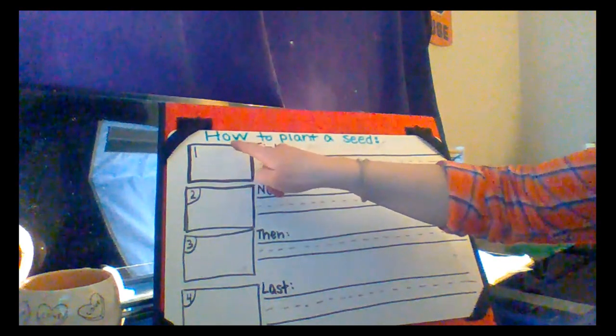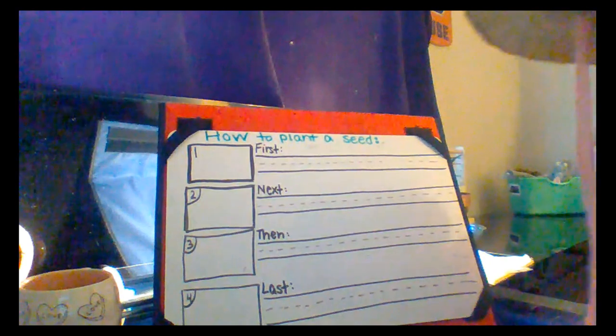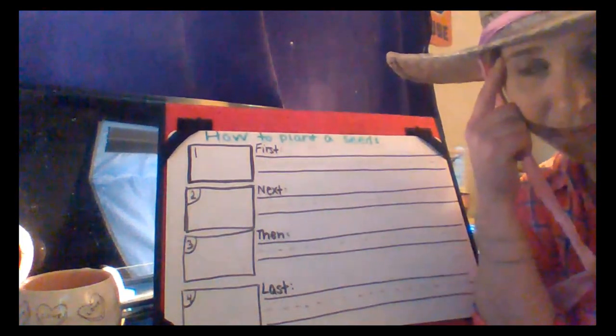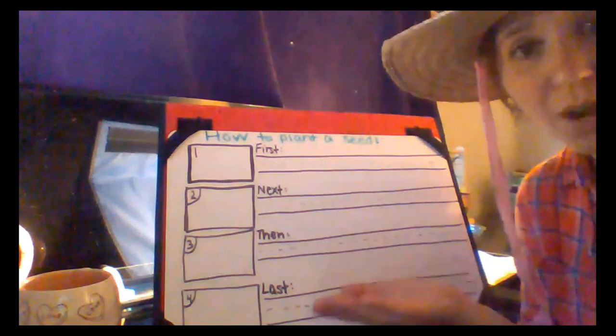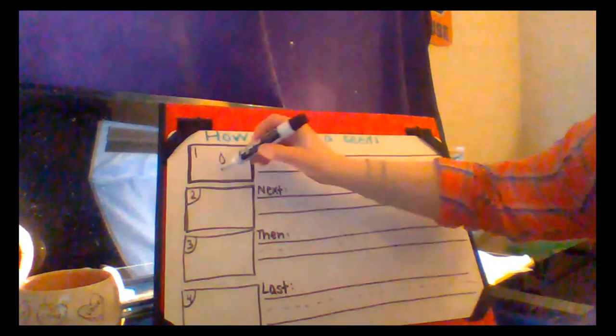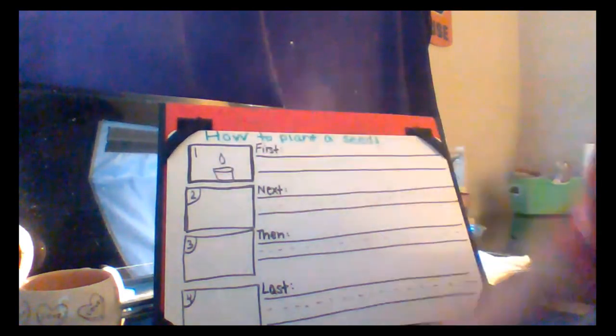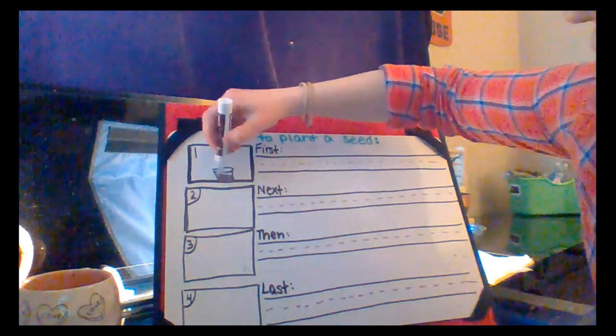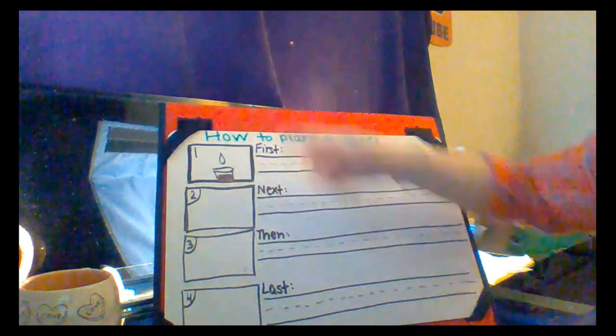Now it's time to write and draw the steps. Now that we know how to plant a seed, it's time for the drawing and the writing of the steps to show our reader how to plant a seed. At the top here I labeled my writing piece 'How to Plant a Seed' so that my reader knows what this writing piece is about. Remember, when we use the writing process, we always first think about the picture, then we draw the picture. I'm going to use my brown marker to make some soil — soil is another word for dirt — so we're going to put the seed in the dirt, in the soil.